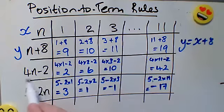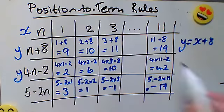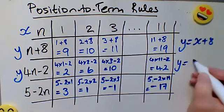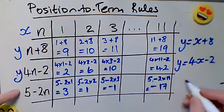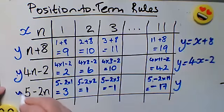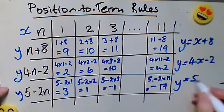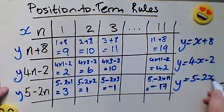Similarly here, this would be the Y value for Y equals 4 lots of X minus 2 and this would be the Y value of 5 take away 2 lots of X.